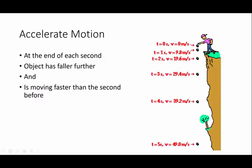Now, as something is dropped, the object is accelerated. Now, what that means is this. At the end of each second, the object is actually going faster than it was the second before. So in this illustration, I've got a person who's on a tall cliff and this fellow is dropping a ball down. If it falls for one second, at the end of one second, it's traveling at 9.8 meters per second.